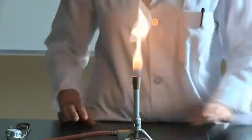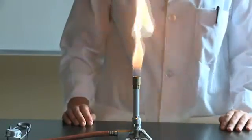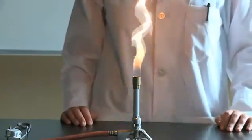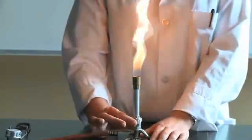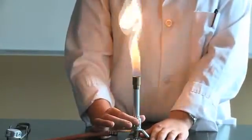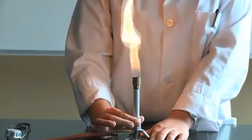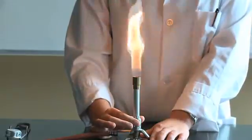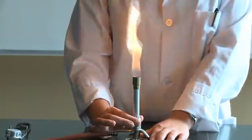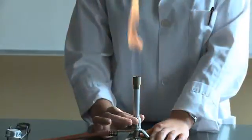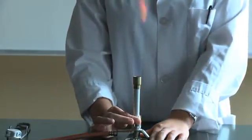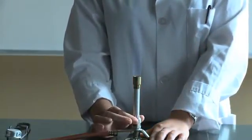Once you have your flame at a sufficient height you'll want to adjust the heat. To make a hotter flame you'll want to turn the barrel. Do this by holding it at the base. To increase the heat you'll want to turn the barrel counterclockwise. This should change the color of your flame from the yellow orange to blue.